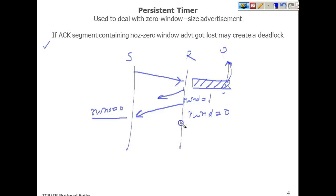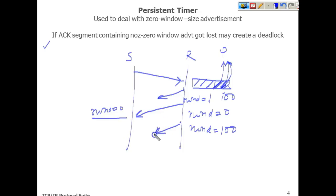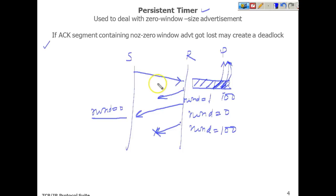After some time, the receiver consumes more bytes from the buffer — let's say 100 bytes — and wants to announce RWND equals 100. But if this particular packet gets lost, the receiver thinks it already informed the sender about its window size, while the sender assumes it must wait because the window is zero. This creates a deadlock where both sides are waiting for each other. To resolve this, there is a timer called the persistence timer.